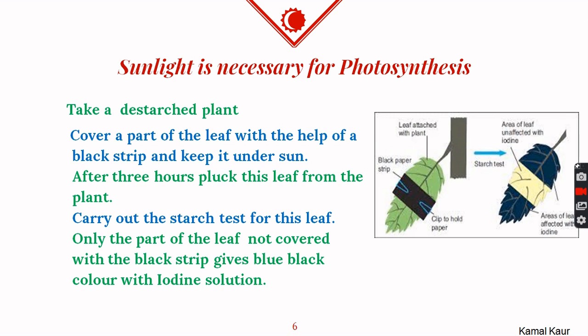The plant is kept under sunlight for a few hours so that photosynthesis can occur. After that, we pluck a leaf and perform the starch test as done in the previous activity. We find that the part covered with the black strip remains colorless, while the parts exposed to sunlight have turned blue-black, clearly showing that only the parts that received sunlight could perform photosynthesis.